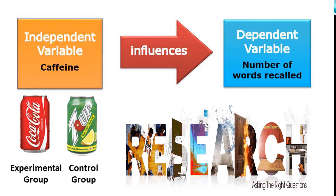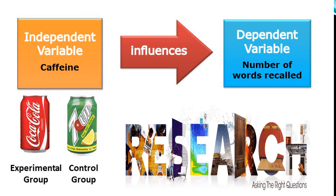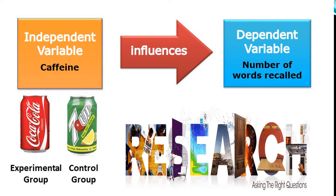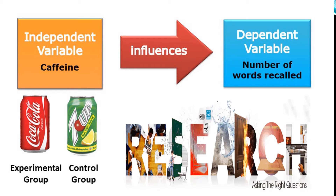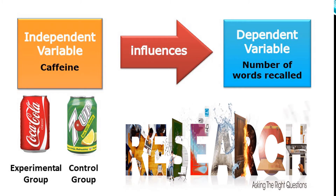Here's an example. Suppose we're wondering if caffeine has an influence on memory. We randomly select a group of subjects and randomly divide them into two groups. One group gets caffeine — that's the experimental group. The other group gets a fake caffeine — that's the control group. Then later we measure their memory, like the number of words they can recall. The caffeine is called the independent variable, and the number of words recalled is called the dependent variable.